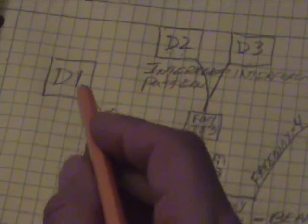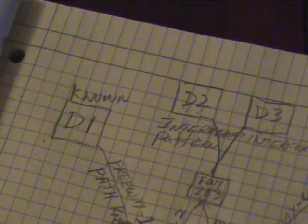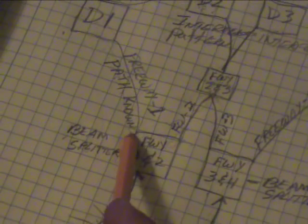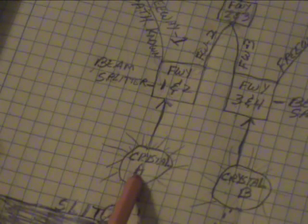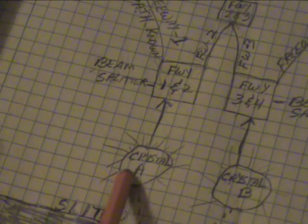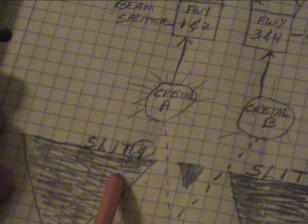And the same thing happens over here. This is a known path. That's the known path right here. And this is the known path. The D4 is a known path. D1 is a known path. Because the particle came here and ended up coming from crystal A and it came from slit A.